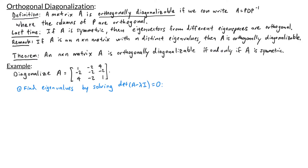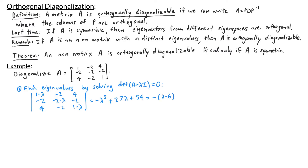The first step in diagonalizing A is to find the eigenvalues. I need to solve the characteristic equation, determinant of A minus lambda I equals 0. Looking at the determinant of the matrix with entries 1 minus lambda, negative 2, 4, negative 2, negative 2 minus lambda, negative 2, 4, negative 2, 1 minus lambda, when we calculate this determinant we get negative lambda cubed plus 27 lambda plus 54. Factoring this polynomial, we get negative (lambda minus 6)(lambda plus 3) squared. Setting this equal to 0 and solving for lambda, we get lambda equals 6 and negative 3. So those are my eigenvalues.